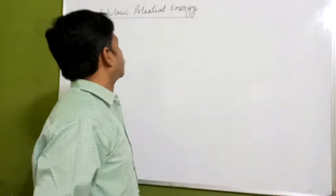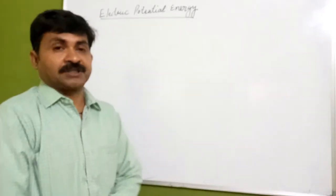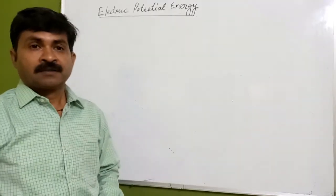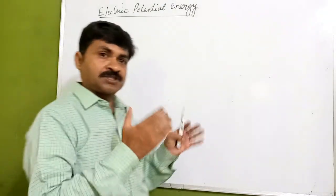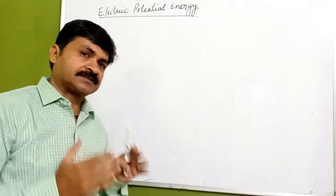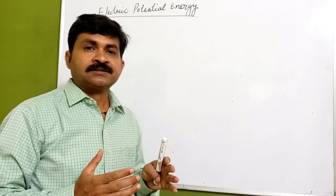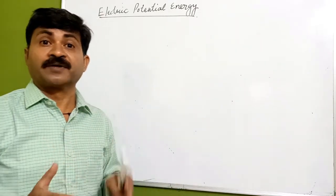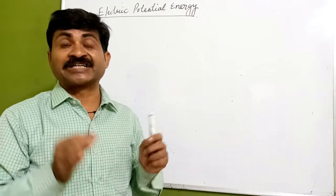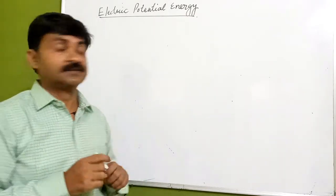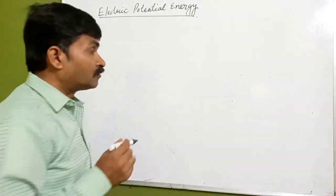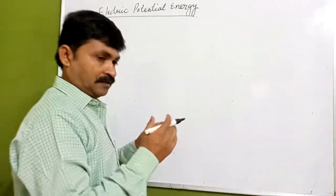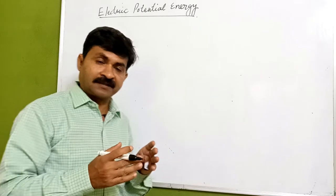We are going to discuss electric potential energy. The definition of electrostatic potential is: the work done in bringing a unit positive charge from infinity to any point in an electric field. Now, in general, we know the definition of potential energy — it is the energy possessed by virtue of the position of an object.